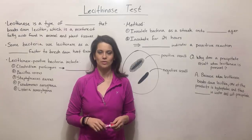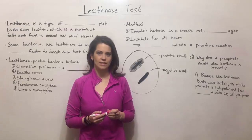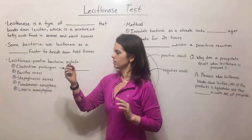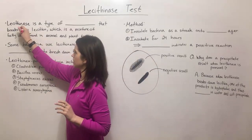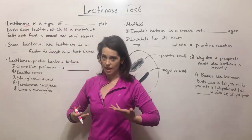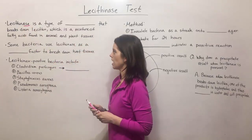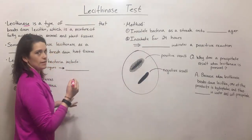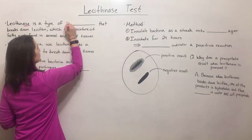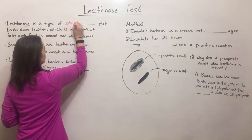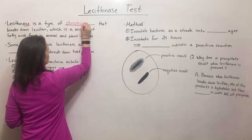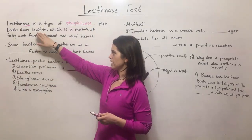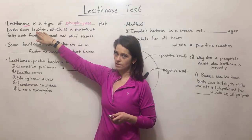Hi everyone and welcome to Biology Professor. Today we're talking about the lecithinase test. Lecithinase is an enzyme — you will probably know that because it ends in -ase, which is always the suffix for enzyme names. It is a type of enzyme known as a phospholipase, and specifically it is a phospholipase that breaks down a substrate known as lecithin.